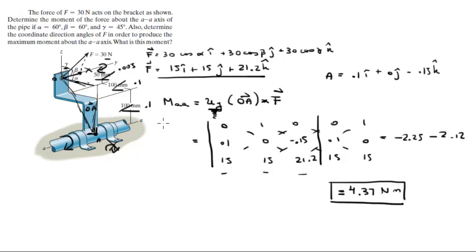Now for the second part, they want you to find the direction angles of F to produce the maximum moment. Remember what I told you: the component of the force in the y is not doing anything because this thing cannot turn any other way that is not the y. So only the z and the x are making it work.